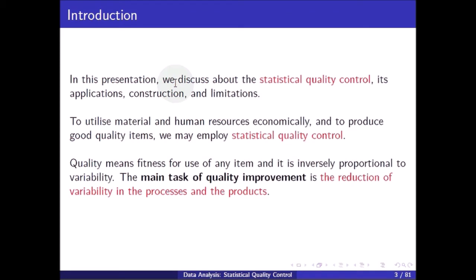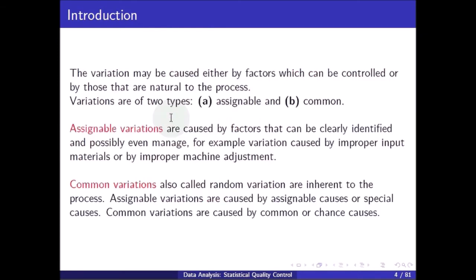To utilize material and human resources economically and to produce good quality items, we may employ statistical quality control. Quality means fitness for use of any item and it is inversely proportional to variability. The main task of quality improvement is the reduction of variability in the process and the products. Variation may be caused either by factors which can be controlled or by those that are natural to the process.